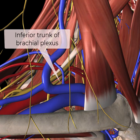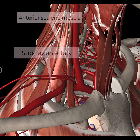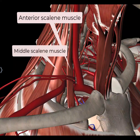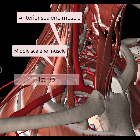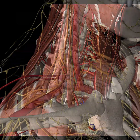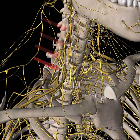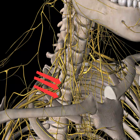The subclavian artery emerges between the anterior and middle scalene muscles, traversing over the first rib and under the clavicle. By isolating the nerves, we can see the cervical nerve roots emerging from the cervical foramen to form the upper, middle, and lower nerve trunks above the first rib.